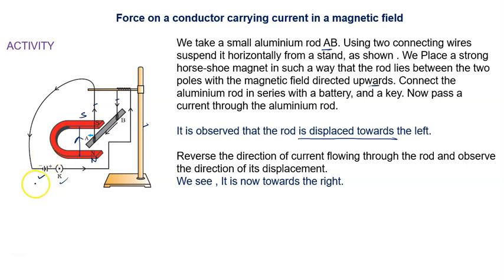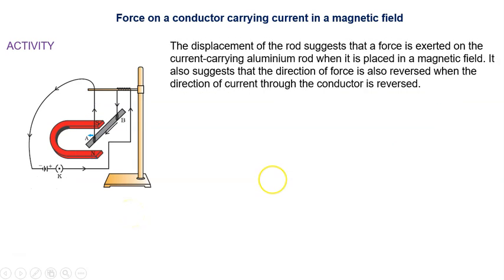If we reverse the direction of current by changing the polarity of the battery — this side positive, this side negative — the direction of flow of current changes. We observe that the direction of displacement also changes, towards the right side. This suggests that a force is exerted on the current-carrying aluminum rod in a magnetic field, and that the direction of the force reverses when the direction of current changes.